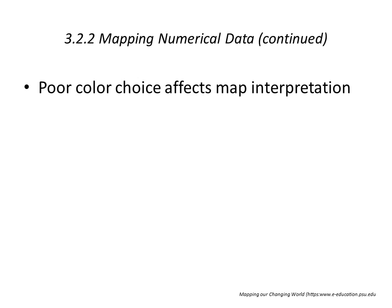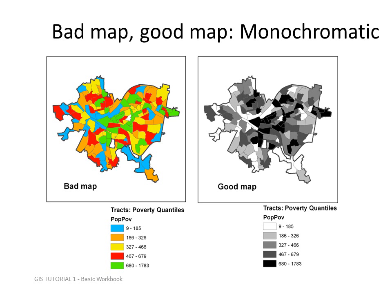Poor color choice affects mapping. Here are two examples: the one on the left, which looks like it has been made with clown paint, is a good example of a bad map because it's almost impossible to interpret its meaning — you get no sequential sense of ordering of the colors. The less colorful choice on the right is a much better map because it uses a single-hue or monochromatic color scale.